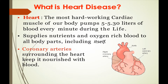What is heart disease? The most hard-working cardiac muscles of our body pump 5 to 5.5 liters of blood every minute during life. The heart supplies nutrients and oxygen-rich blood to all parts of the body, including itself. Coronary arteries surrounding the heart keep it nourished with blood, supplying oxygen to every muscle and organ.